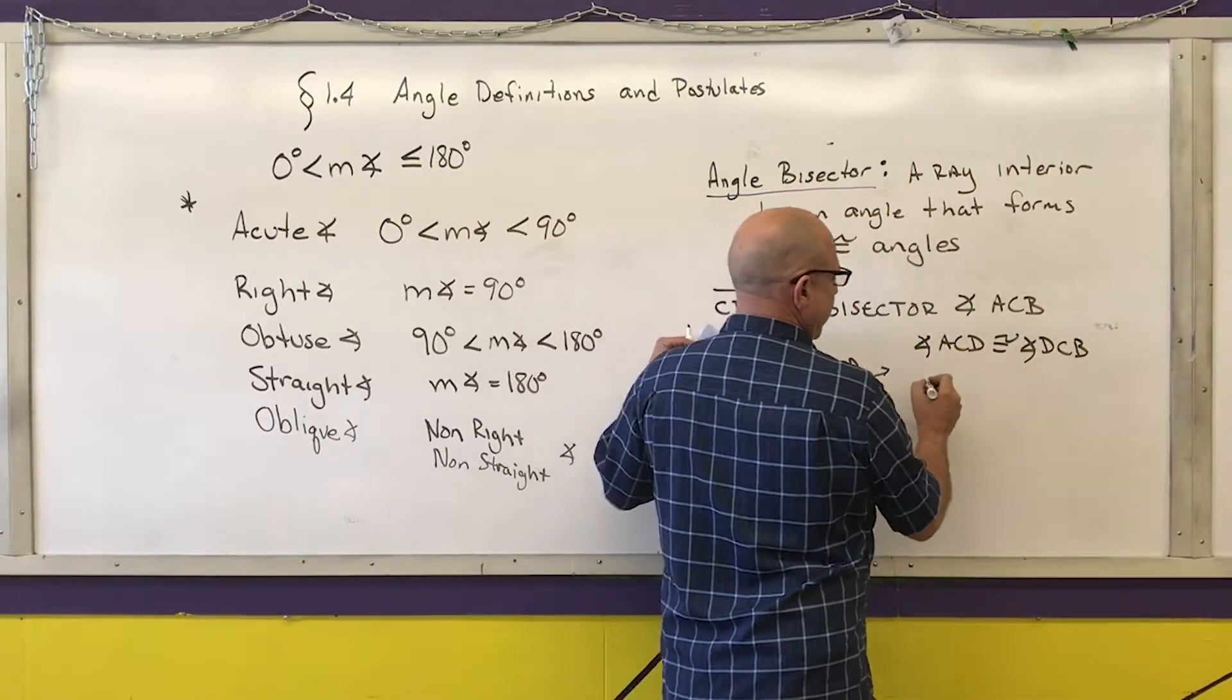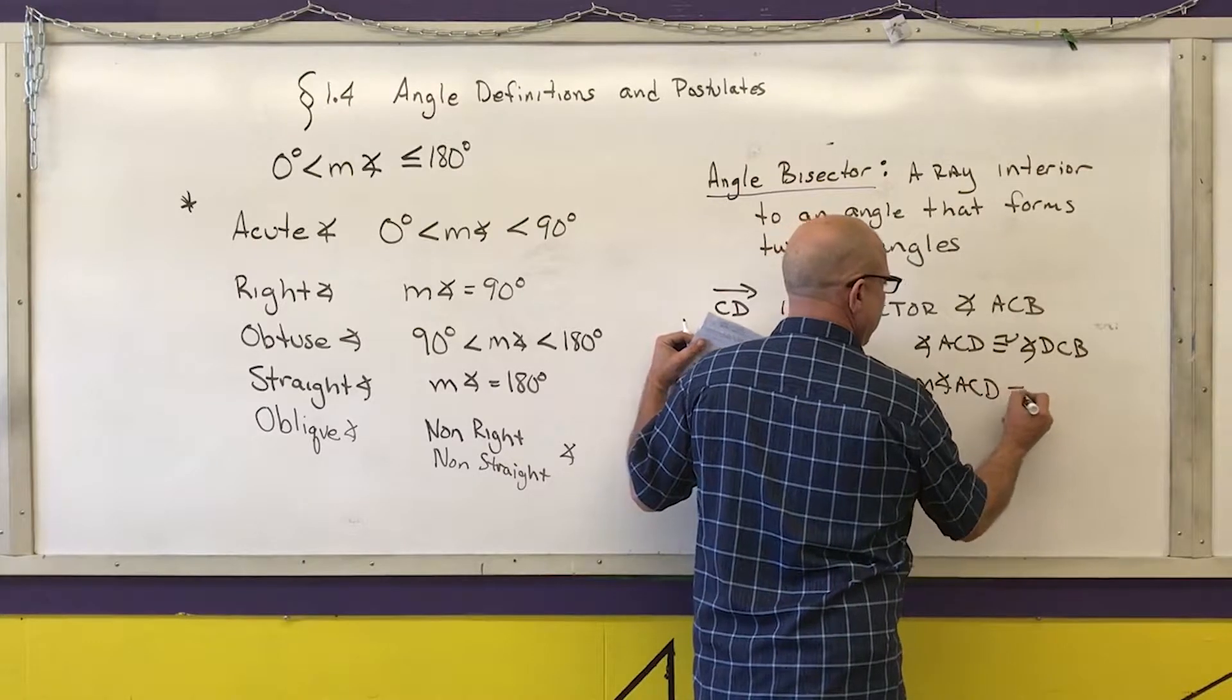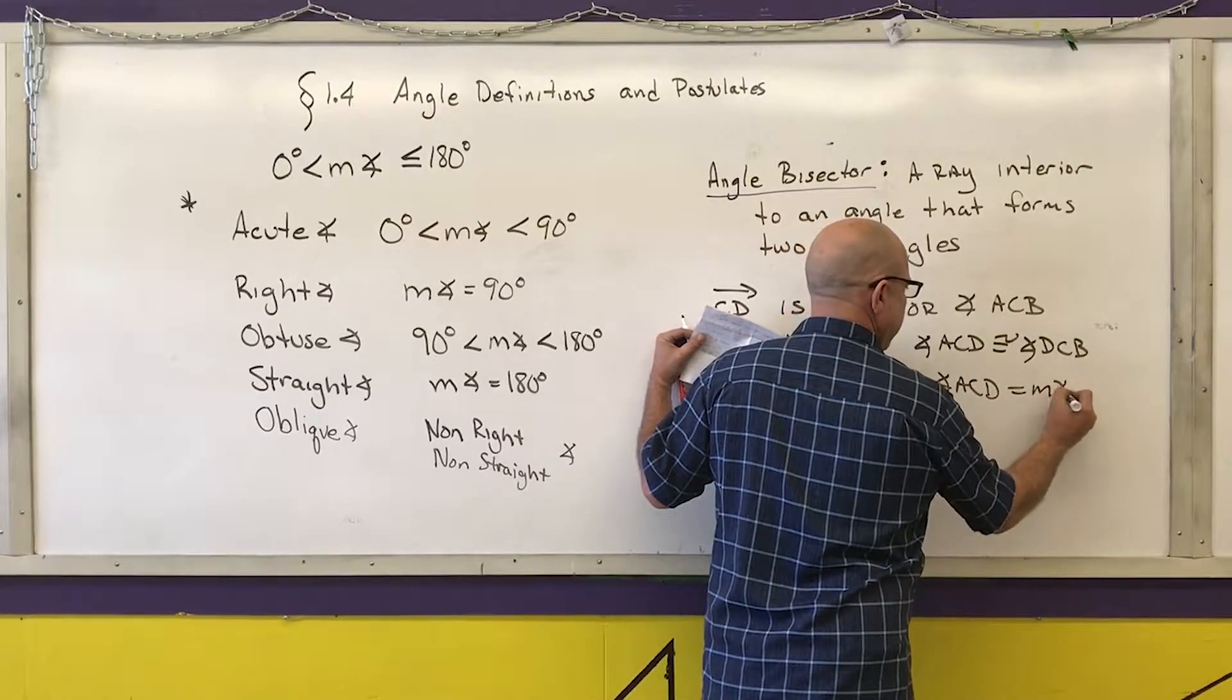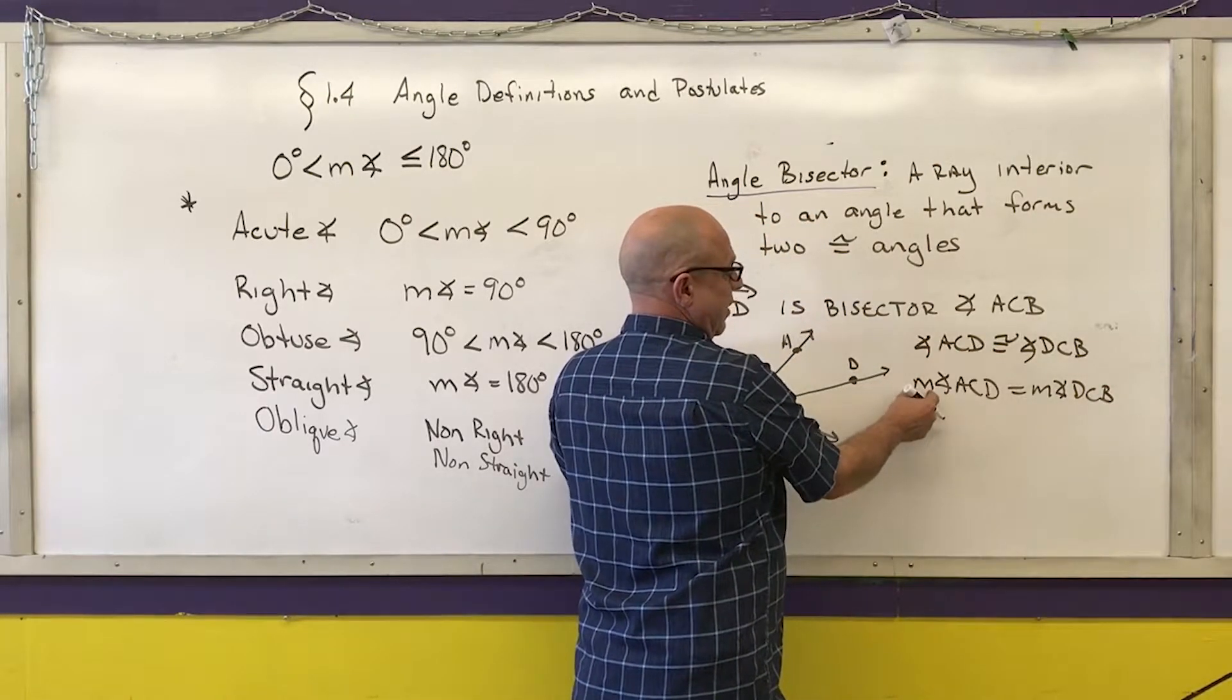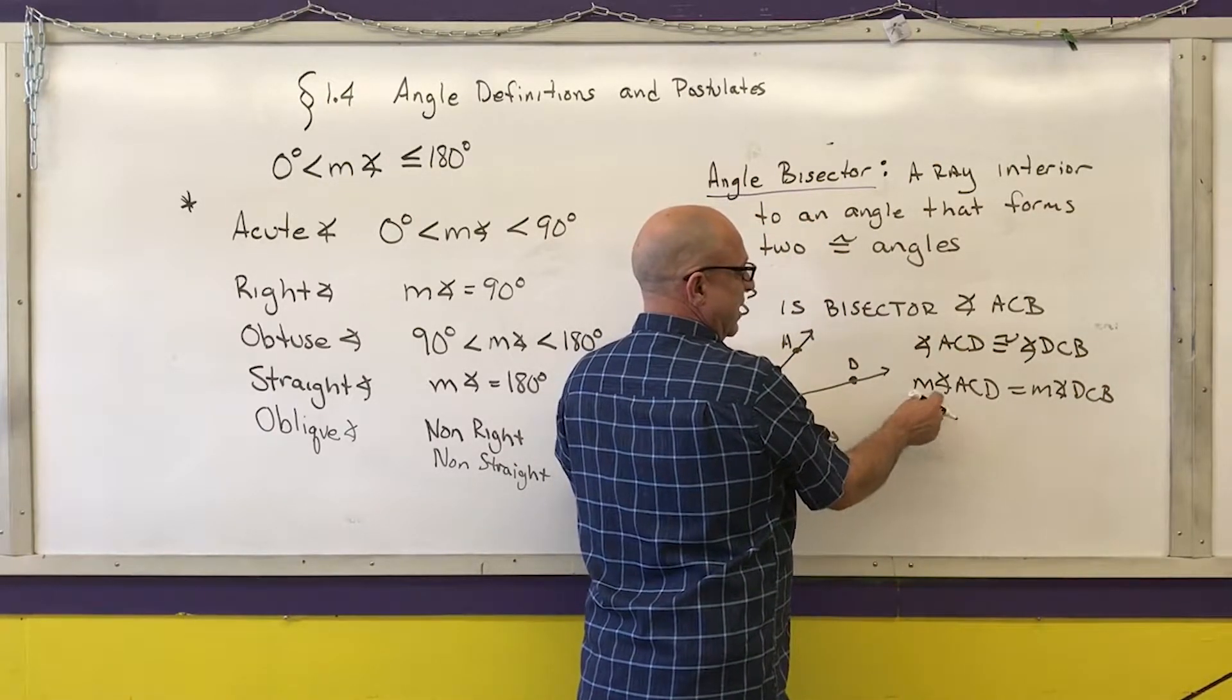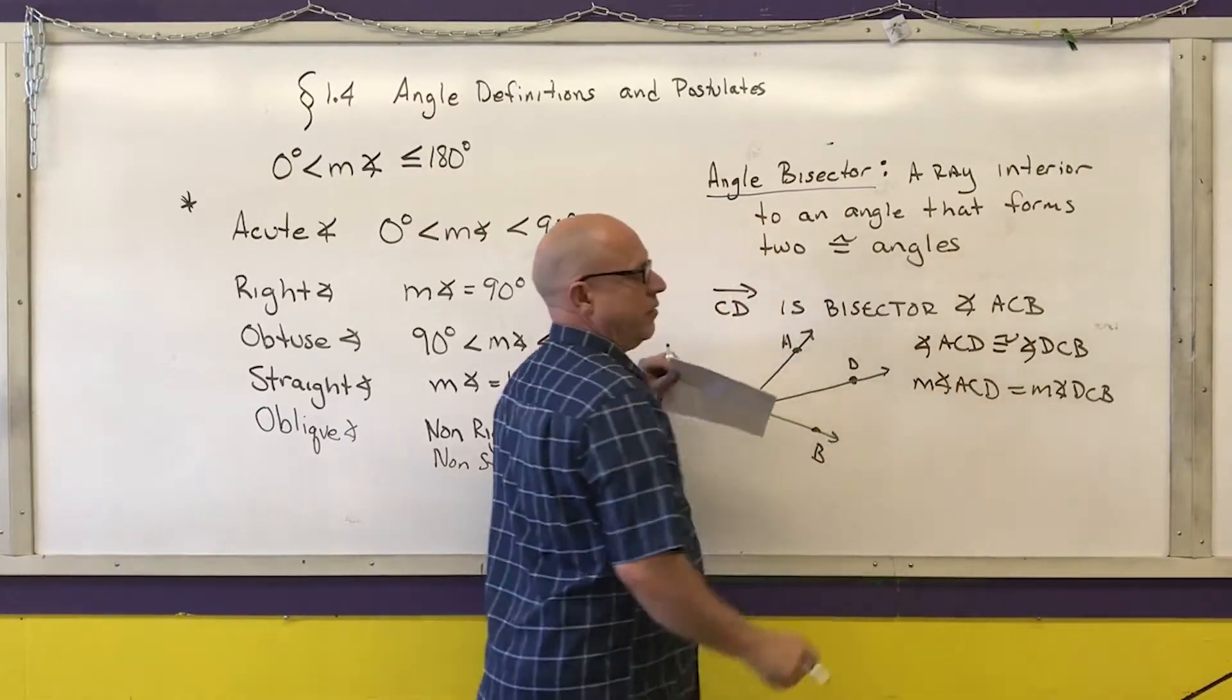If the two angles are congruent, I know that their measurements are equal to each other. Never give me a congruent symbol unless you have, if you give me the measurement sign, and never give me an equal symbol without the measurement in front of the angles.